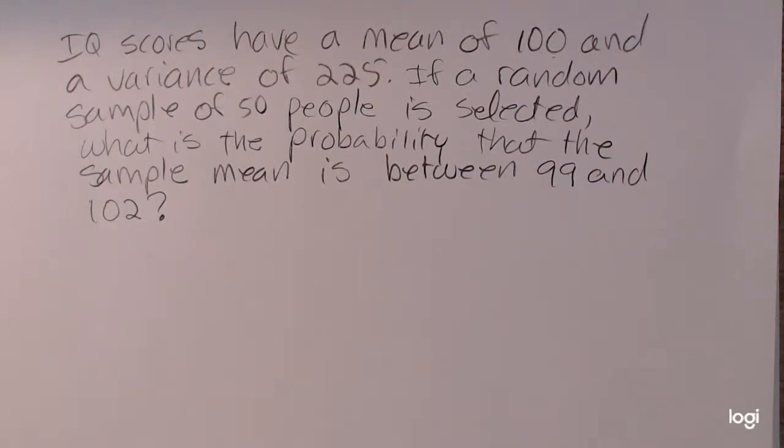This video is my second central limit theorem example. IQ scores have a mean of 100 and a variance of 225. If a random sample of 50 people is selected, what is the probability that the sample mean is between 99 and 102?